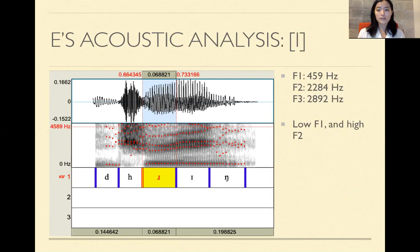And this is for /e/. So the F1 for /e/ was 459 hertz, F2 2,284 hertz, and 2,892 hertz. It has a pretty low F1 and a pretty high F2, but it is not as high as /e/ would be, which we'll see in comparison to M's drink later.